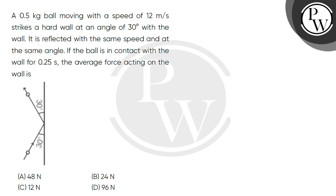Hello, let's read the question. A 0.5 kg ball moving with a speed of 12 meters per second strikes a hard wall at an angle of 30 degrees with the wall. It is reflected with the same speed and at the same angle. If the ball is in contact with the wall for 0.25 seconds, the average force acting on the wall is...